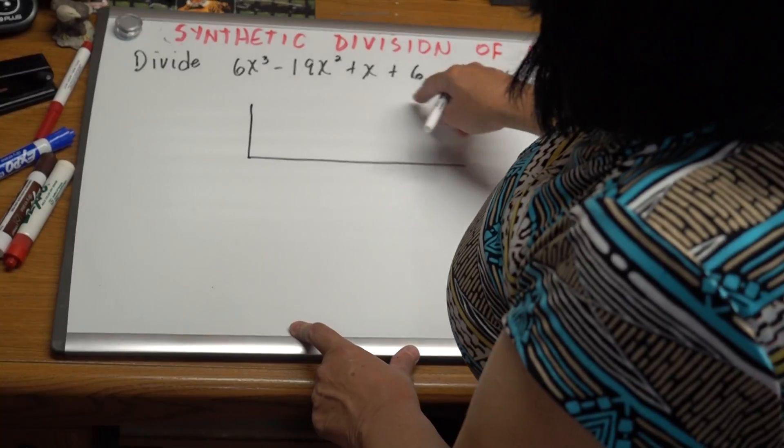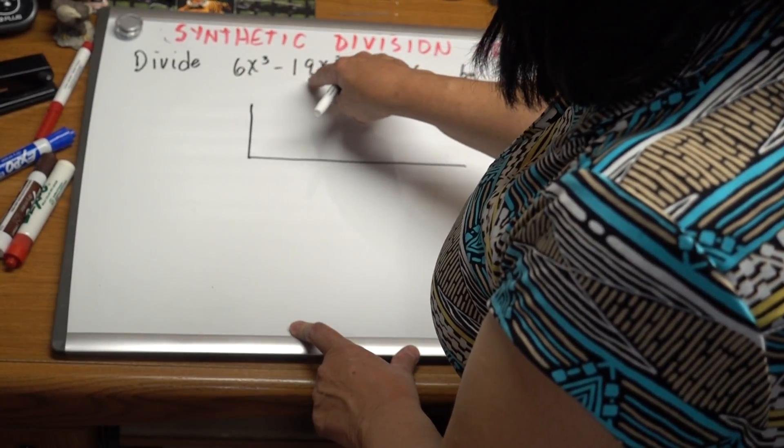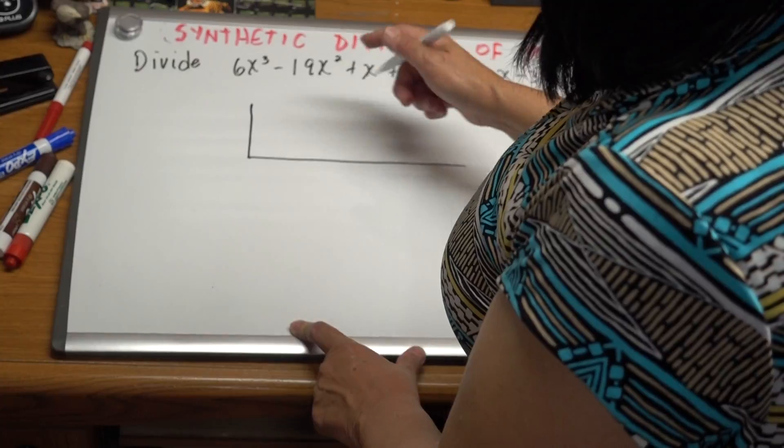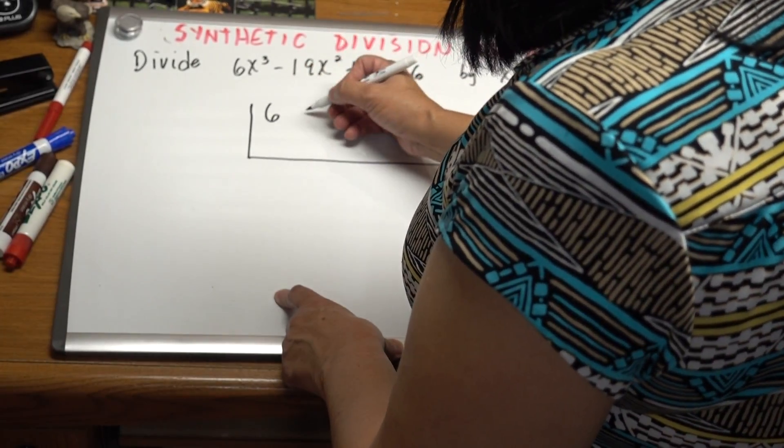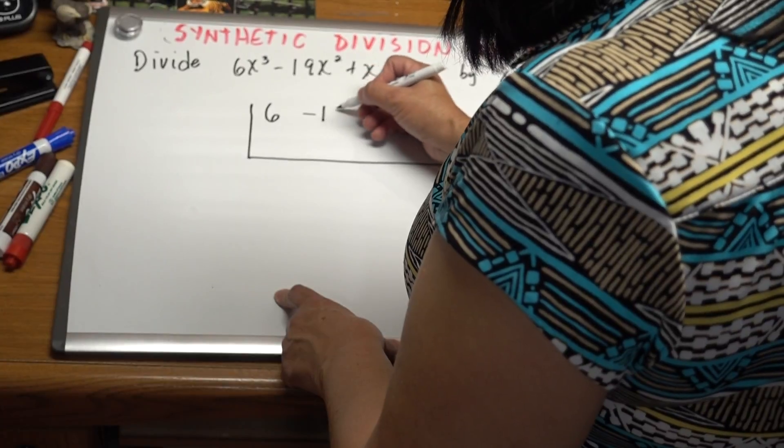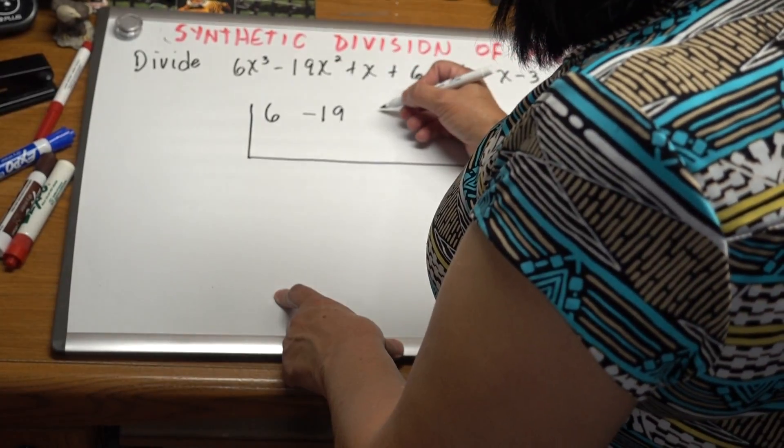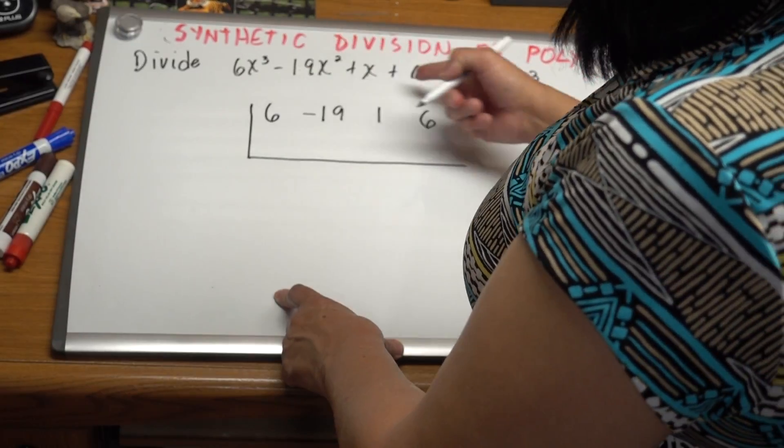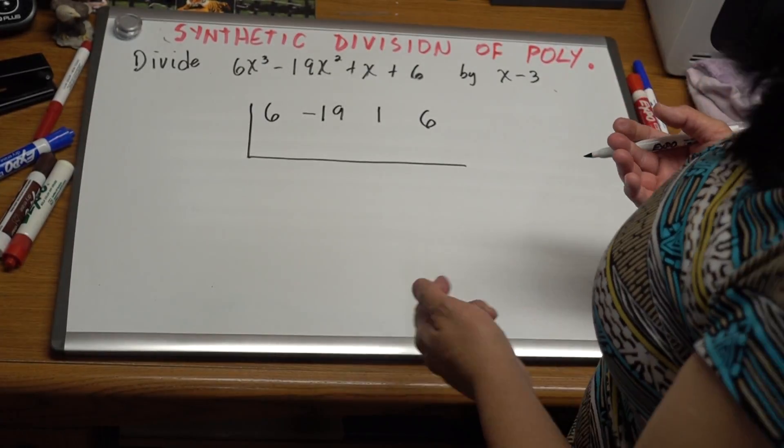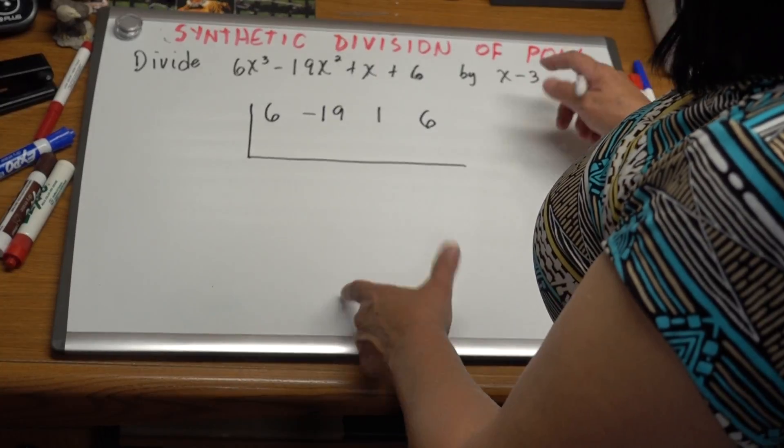What we have to do is copy just the coefficients of each term. So the first one will be 6, the next one will be -19, the next one will be positive 1, and the last one will be positive 6. We're not missing any terms, that's why we're not inserting zeros.